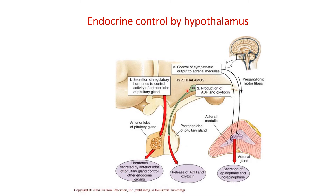The second way: in the hypothalamus there are secretory neurons that send their axons to the posterior pituitary gland. These neurons synthesize and release a couple of hormones — oxytocin and ADH. They are stored there and released by the hypophysial veins to their target tissue.